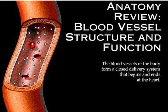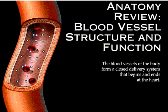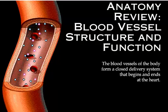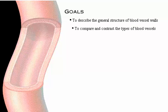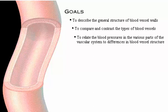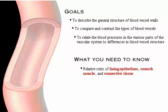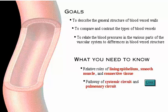The blood vessels of the body form a closed delivery system that begins and ends at the heart. Your goals for learning are to describe the general structure of blood vessel walls, to compare and contrast the types of blood vessels, and to relate the blood pressures in the various parts of the vascular system to differences in blood vessel structure. Here's what you need to know: the relative roles of lining epithelium, smooth muscle, and connective tissue, and the pathway of systemic and pulmonary circuits.